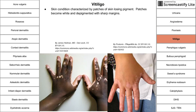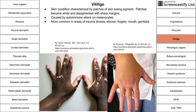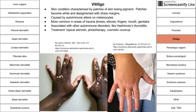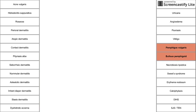Vitiligo is a skin condition characterized by patches of skin losing their pigment, becoming white and depigmented with sharp margins. It can be caused by autoimmune attack on melanocytes. It is more common in areas of trauma like the knees, elbows, fingers, mouth, and genitalia, and is associated with other autoimmune disorders like Hashimoto's thyroiditis. Treatment is topical steroids and phototherapy; if those fail, cosmetic cover-up of depigmented skin is an option.